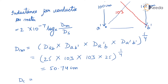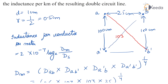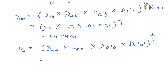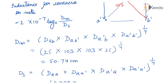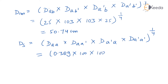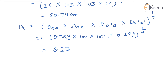Now self GMD ds — for conductors A and A' — equals the fourth root of (d_AA × d_AA' × d_A'A × d_A'A'). The effective radius r' = 0.7788 × r = 0.7788 × 0.5 = 0.389 cm. So ds equals the fourth root of 0.389 × 100 × 100 × 0.389, which gives 3.23 cm.